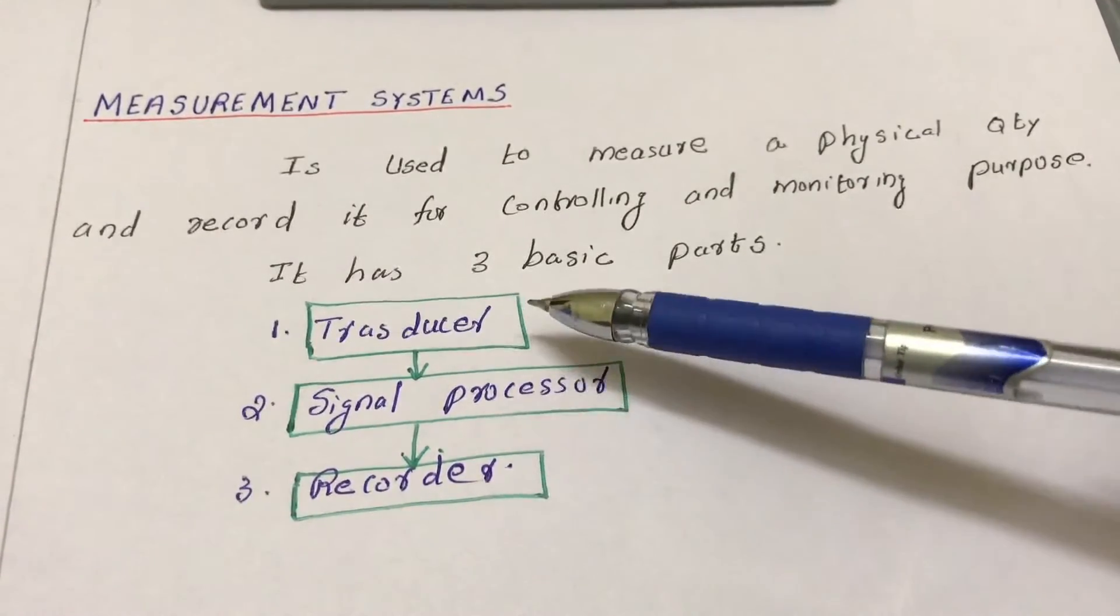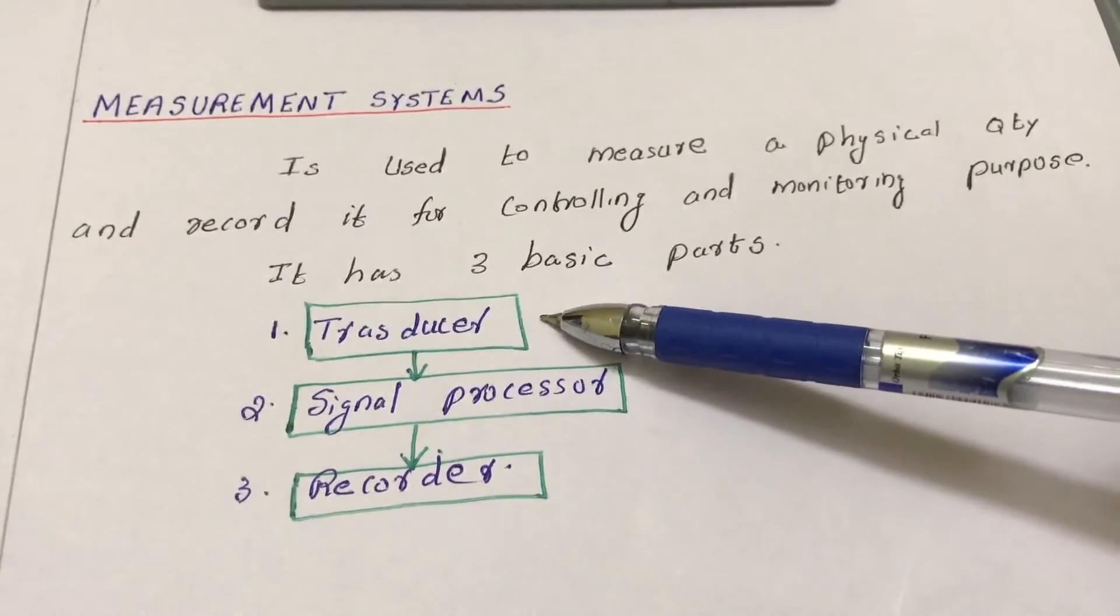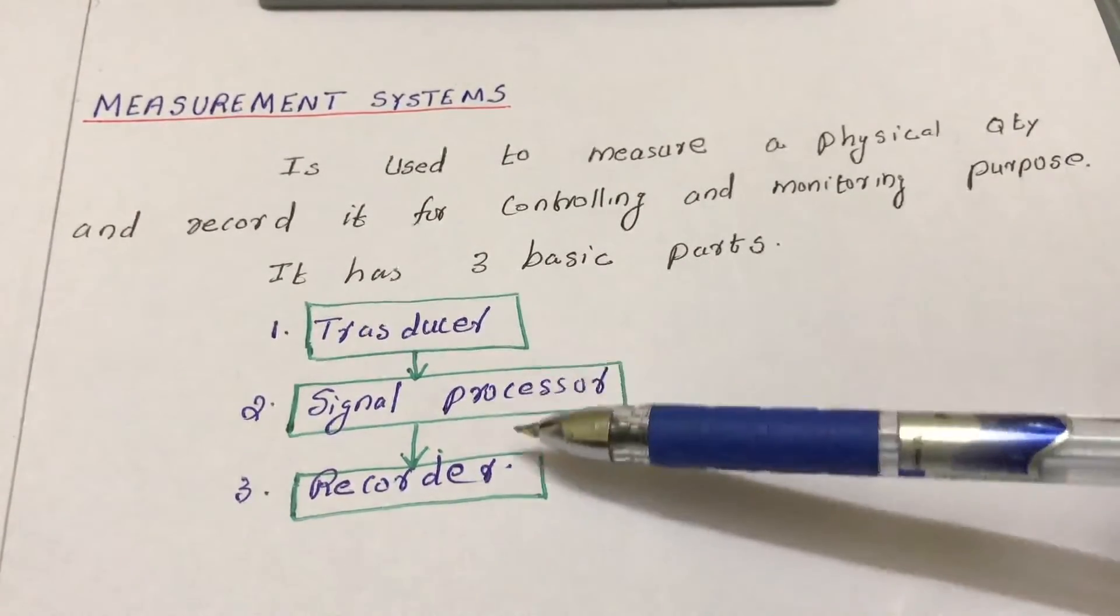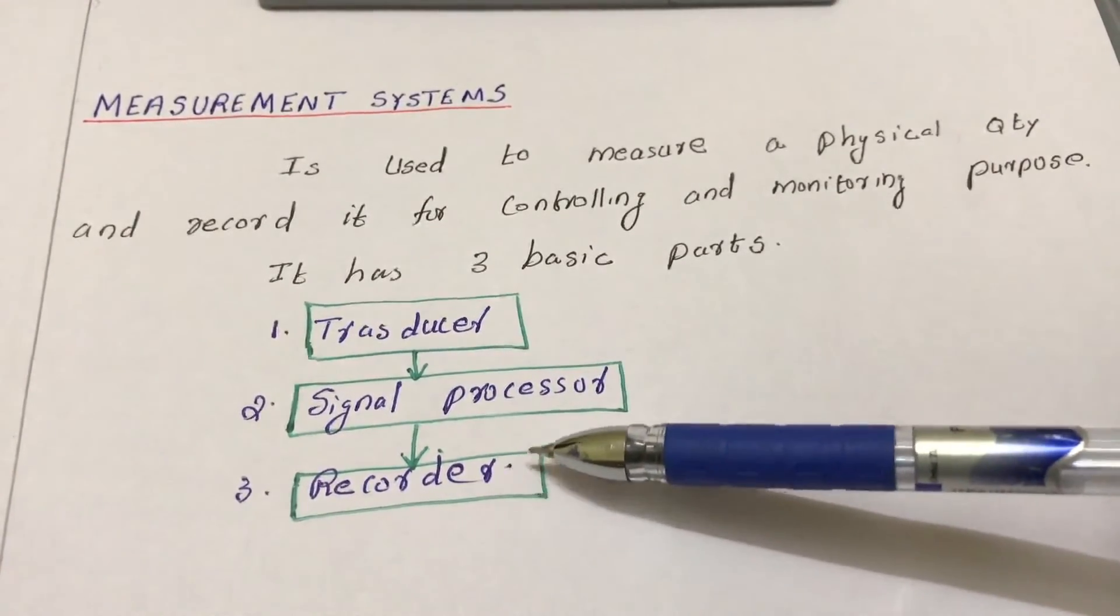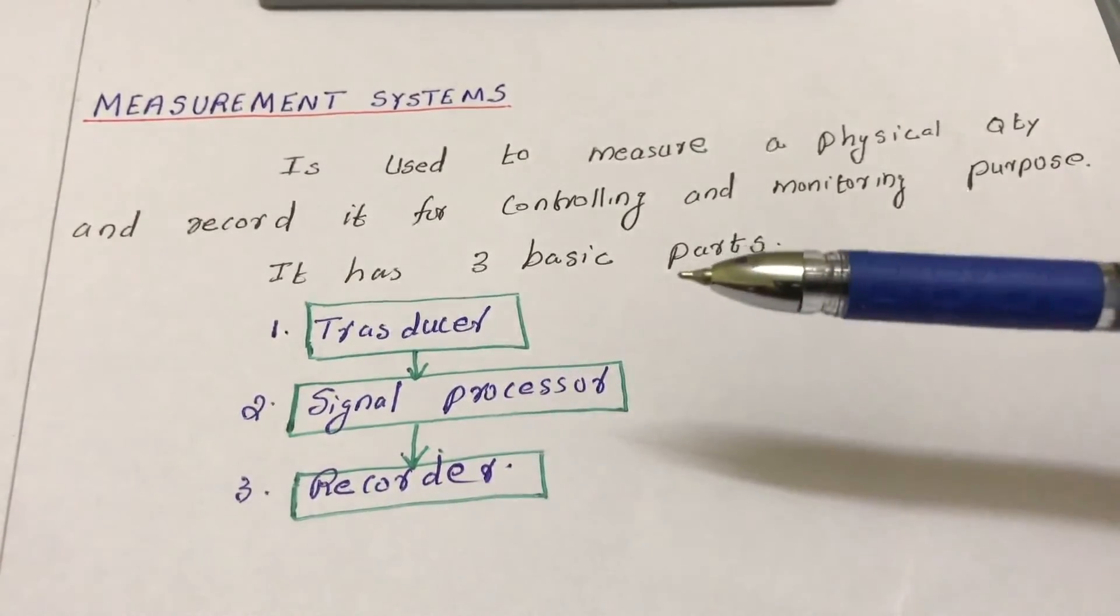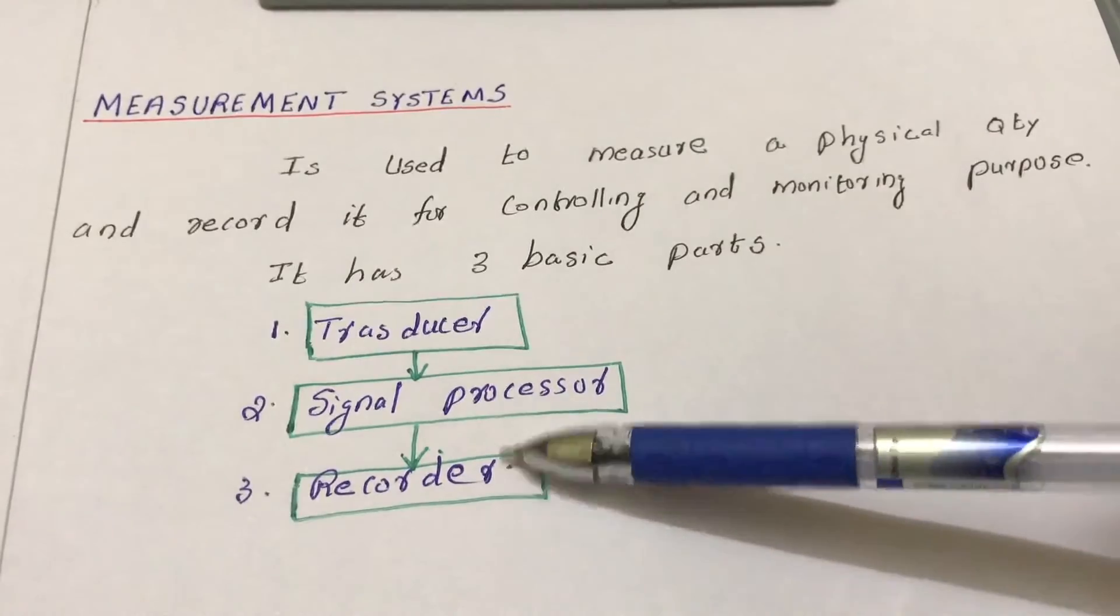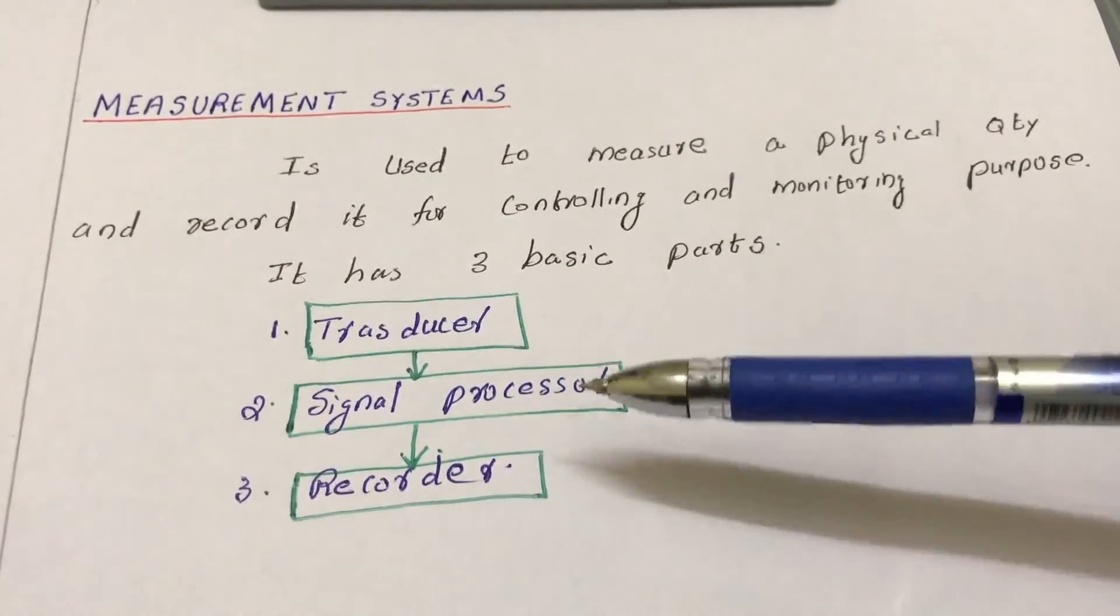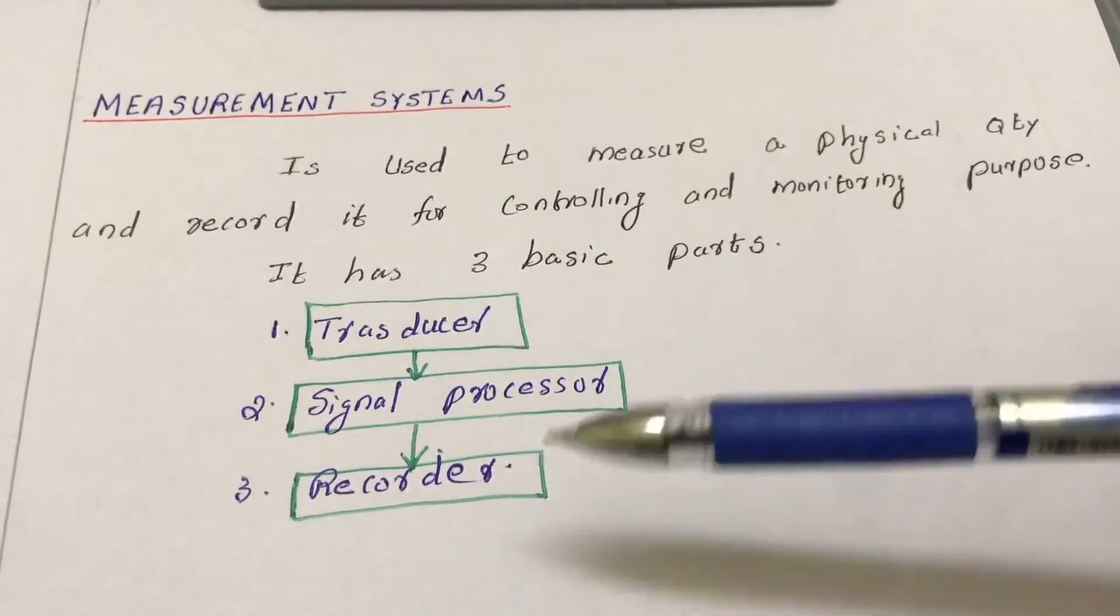For example, suppose the vibration is 88 or 85; it will show in the digital display as 88. The voltage is converted to the required output we need, and this output is used as a feedback system for further controlling and monitoring.